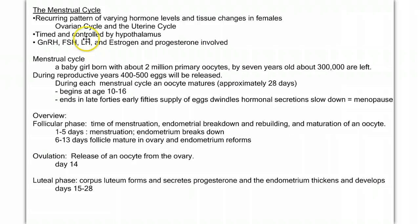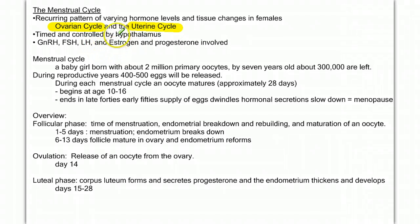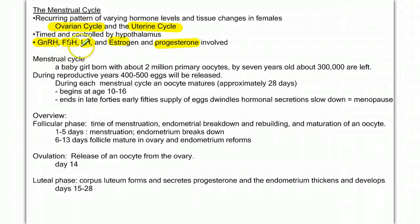So let's look at the overview of the menstrual cycle — this reoccurring pattern of varying hormone levels and tissue changes in females. It consists of two parts: the ovarian cycle (the maturation and release of an egg in the follicle) and the uterine cycle (the building up and breaking down of the endometrium wall). The timing and control of these two cycles is ultimately controlled by the hypothalamus and is under the influence of five different hormones: gonadotropin-releasing hormone, FSH (follicle-stimulating hormone), LH (luteinizing hormone), estrogen, and progesterone.